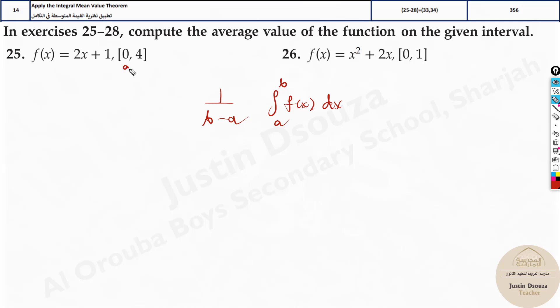Now the limits over here, the initial one is a and b. Same thing over here a and b. And this is the function. So all you need to do is substitute over here. b is 4 minus a is 0. Integral a is 0 to 4. Function is 2x plus 1 dx. You just put this in the calculator you get the answer.